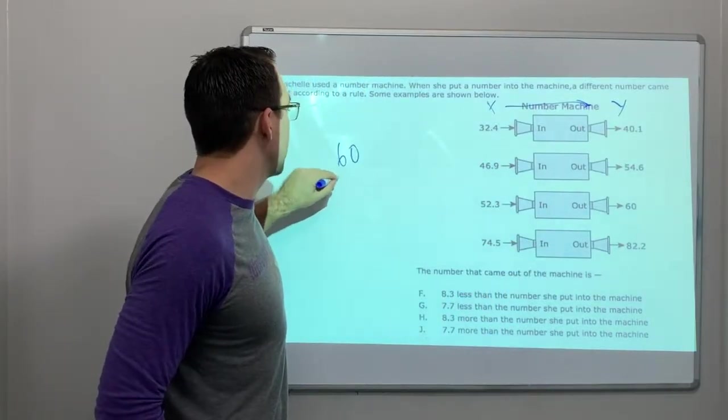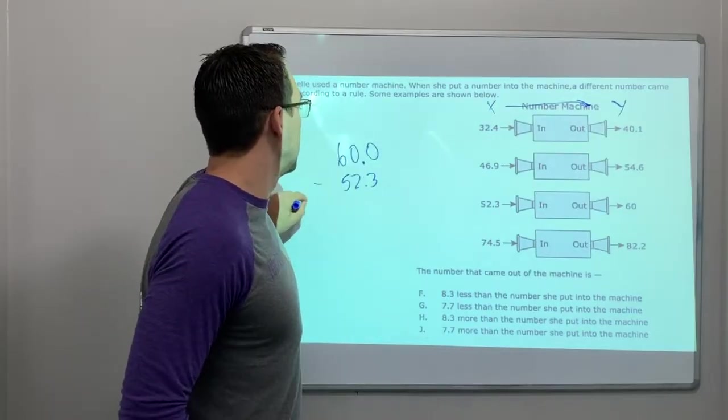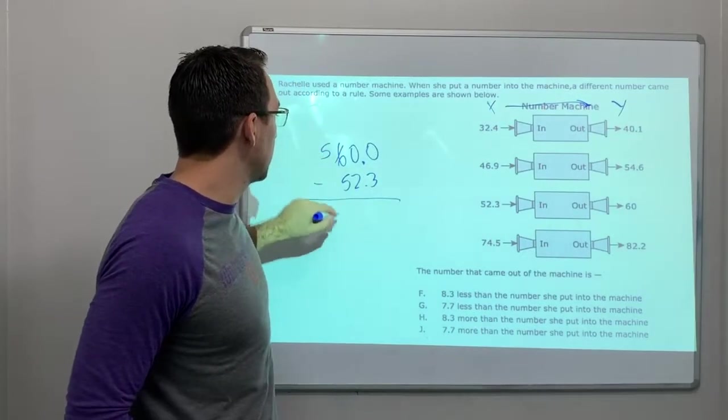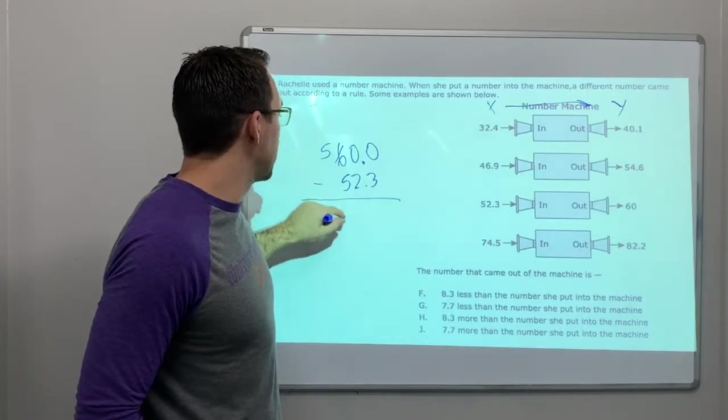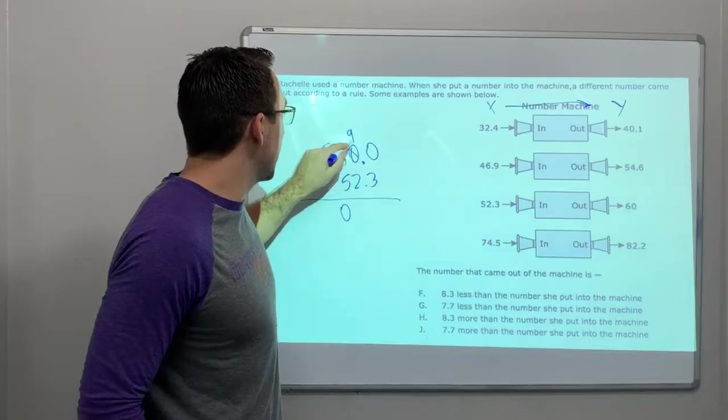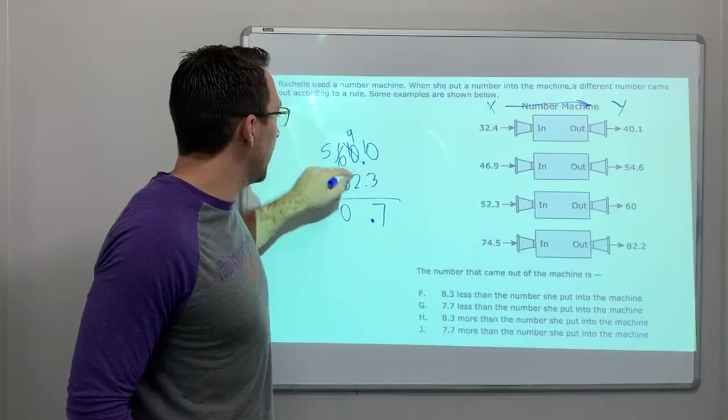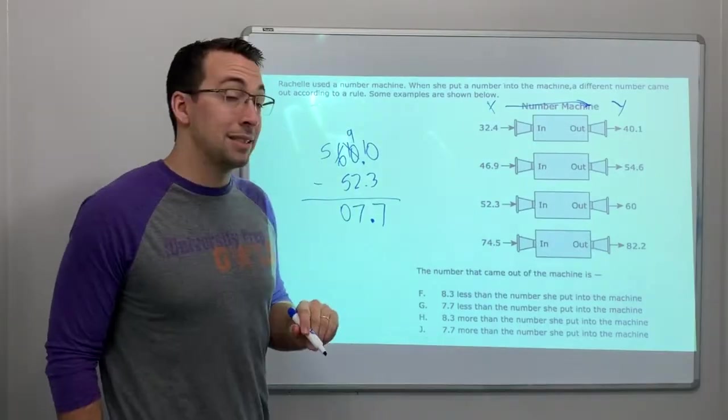60 minus 52.3. So we'll add a decimal. And we'll say 5. Okay. So, 5 minus 5 is 0. Go to the 10. We'll borrow from the 10. That's a 9. To get all the way, 10 minus 3 is 7. Drop our decimal. 9 minus 2 is 7. 7.7.